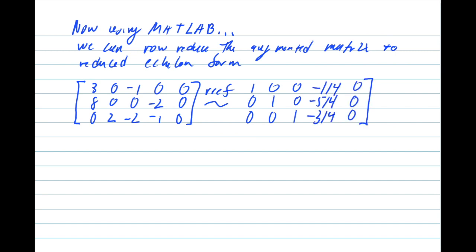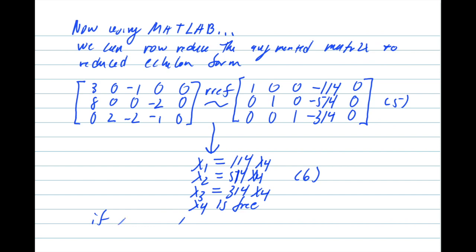And we're going to use the RREF function that's built in MATLAB to get the matrix that's in equation 5. Just like I said in the last video, after you do the row reduction and you get the general solution, you should have X1 equals 1/4 X4, X2 equals 5/4 X4, X3 equals 3/4 X4, and X4 is free. And if X4 equals 4, the chemical equation is 1C3H8 plus 5O2 to 3CO2 plus 4H2O.